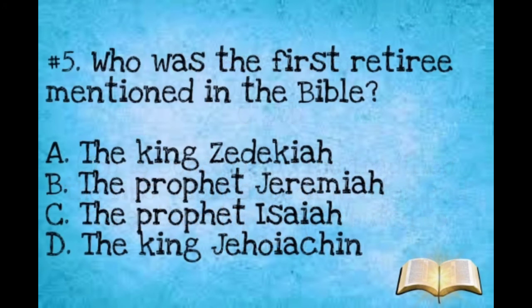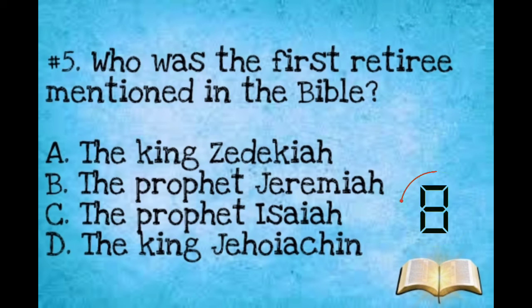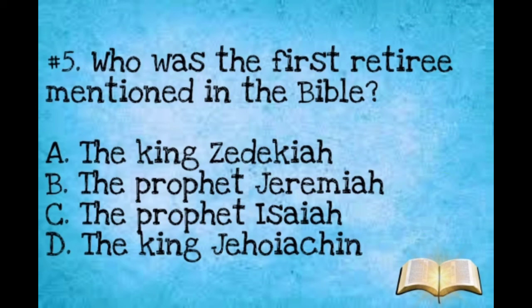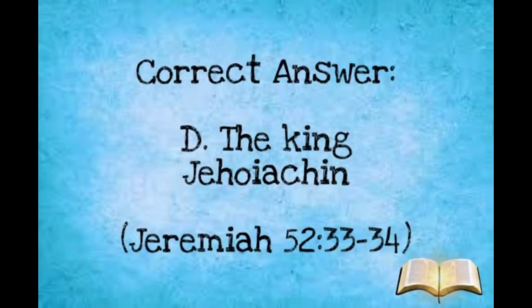Last question: Who was the first retiree mentioned in the Bible? A: The king Zedekiah. B: The prophet Jeremiah. C: The prophet Isaiah. D: The king Zedekiah. The correct answer is D, the king Zedekiah.